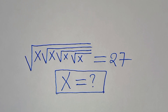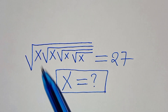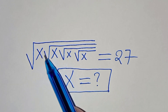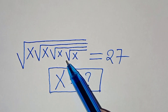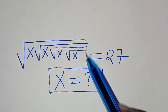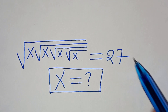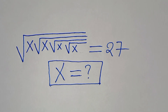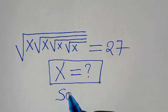Welcome, everyone. We're going to solve this square root math problem: the square root of x, multiplied by the square root of x, multiplied by the square root of x, multiplied by the square root of x, equals 27. What is the value of x? Let's provide a solution.